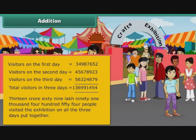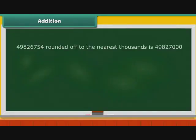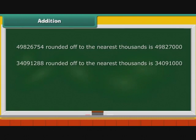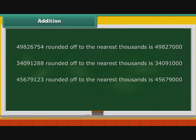At times, we do not want the exact sum of numbers — we want an approximate value. In such cases, we estimate the sum by rounding off the numbers. Let us estimate the sum of 49826754, 34091288, and 45679123 to the nearest thousands.